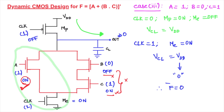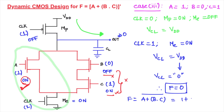The pre-charged value VDD is pulled down to 0. The output stored in CL becomes 0, so f = 0. Substituting the values: (1 + 0·1)̄ = (1 + 0)̄ = (1)̄ = 0. The correct value is obtained, confirming that the design is correctly implemented for f = (a + b·c)̄. This verification approach applies to any logic, including static CMOS design.